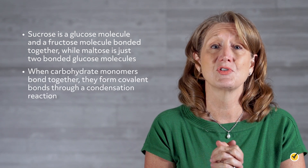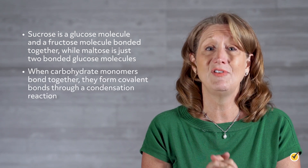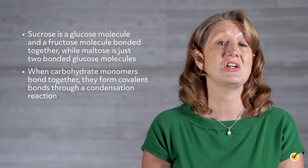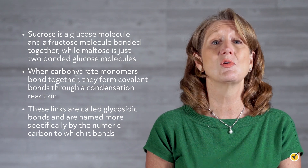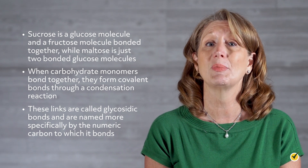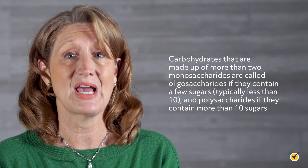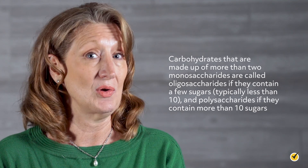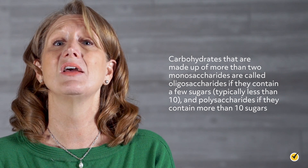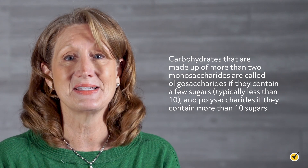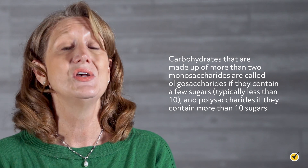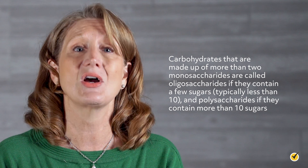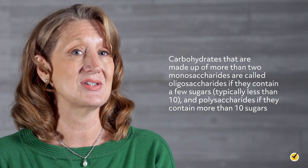When carbohydrate monomers bond together, they form covalent bonds through a condensation reaction. These links are called glycosidic bonds and are named more specifically by the numeric carbon to which it bonds. Carbohydrates made up of more than two monosaccharides are called oligosaccharides if they contain a few sugars, typically less than 10, and polysaccharides if they contain more than 10 sugars. So polysaccharides are just complex oligosaccharides.